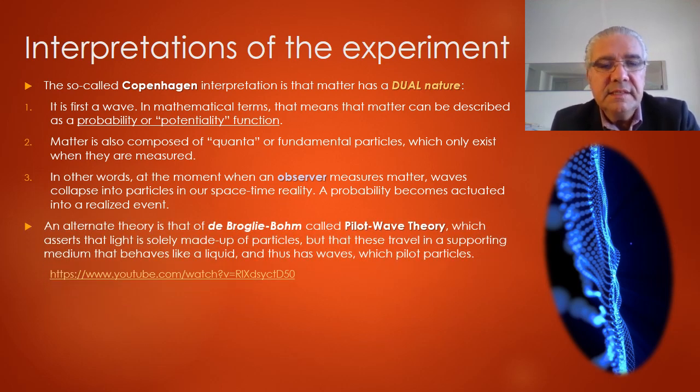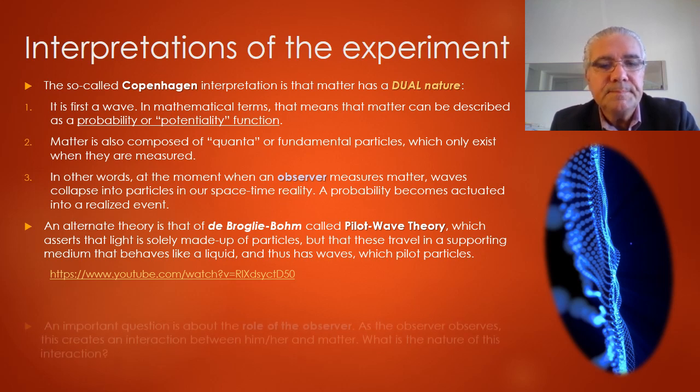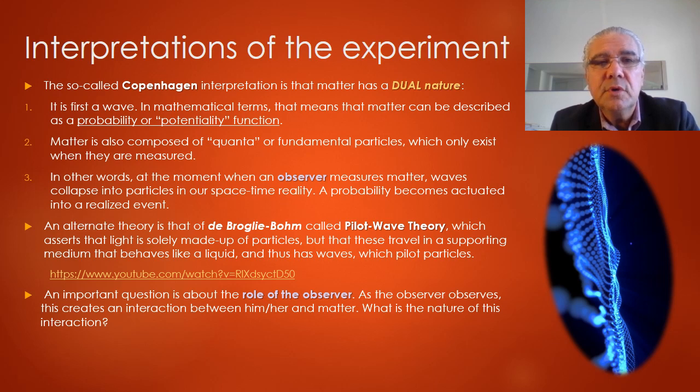An alternate theory is that of de Broglie-Bohm called pilot wave theory, and in that theory they assert that light is solely made up of particles, so it's not a wave, but that these particles travel on a supporting medium that behaves like a liquid and thus has waves, which are the waves that pilot the particles. I'm putting a link to these explanations on YouTube. An important question, therefore, emerges about the role of the observer, because the observer really interacts with the experiment. So what is the nature of that interaction?